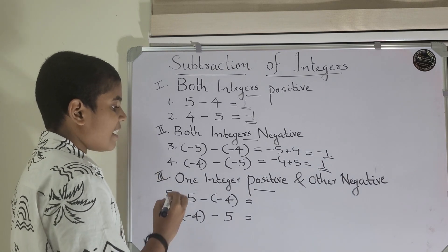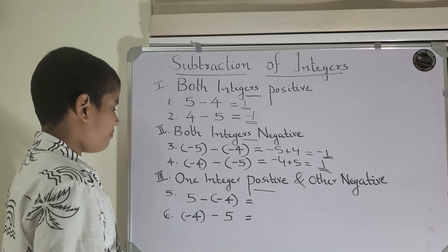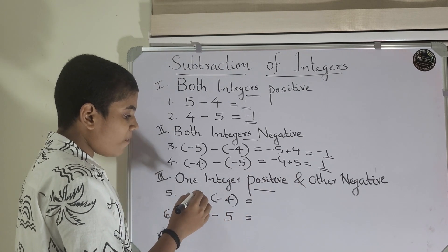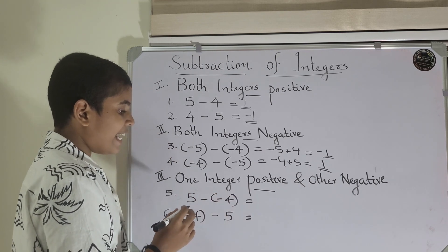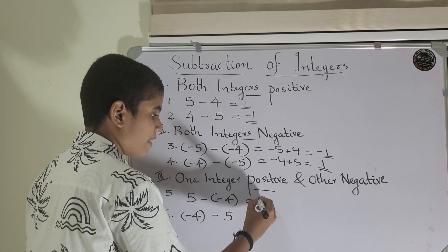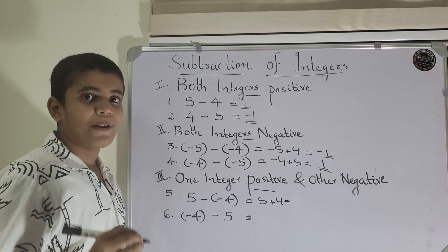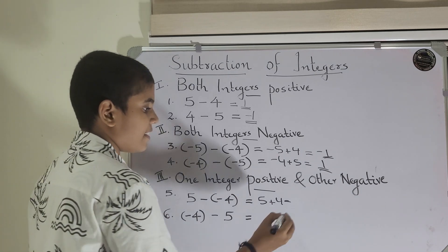Let's see the last case. One integer is positive and the other integer is negative. 5 minus minus 4. Here, minus times minus is plus. So, you can rewrite it as 5 plus 4. What is 5 plus 4? Yes, you are right. It is 9.